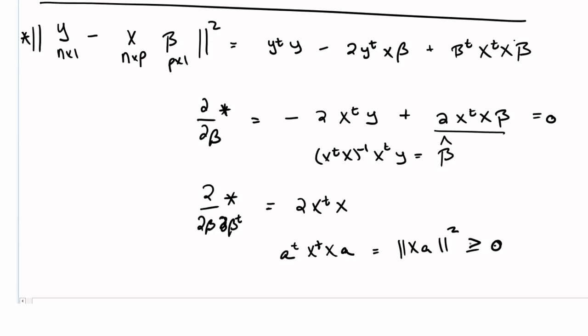So that means that our solution to our derivative is in fact a minimum, and so this β hat is the minimizer of this least squares solution. So that's an example of using our matrix derivative results to find a solution to a statistically meaningful equation.